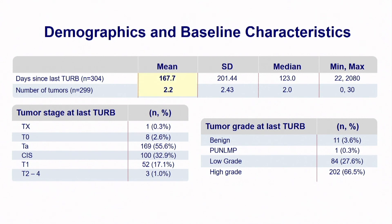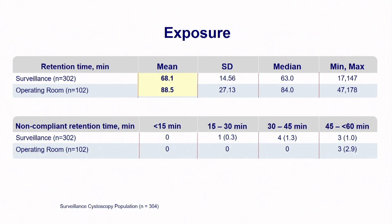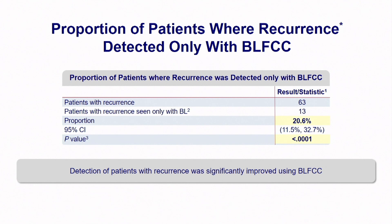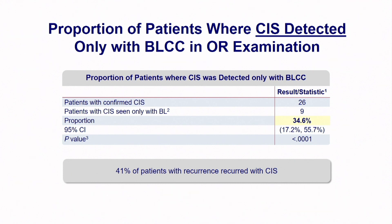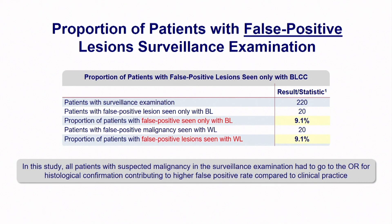Most patients were undergoing surveillance within six months of initial tumor diagnosis, many with multifocal tumors — predominantly TA tumors and some CIS. Exposure time averaged a little over an hour for the office procedure, slightly longer for those going to the OR. There was a significant proportion of increased detection in patients who underwent blue-light evaluation: a 20% enhanced detection of papillary tumors, about 30% detection of carcinoma in situ, and additional tumors seen in up to about 40% of patients. False indications were similar in both white-light and blue-light groups.